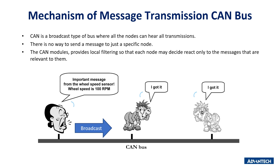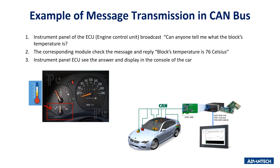CAN is a broadcast-type bus where all nodes can hear all transmissions — there is no way to send a message to just one specific node. However, the CAN hardware provides local filtering so each node can react only to relevant messages. For example, inside a car the ECU sends a message requesting the engine block temperature. All modules receive the message; those with relevant filters respond. The ECU takes the temperature information and displays it on the console. This same information can be displayed on an external panel using a CAN bus PCI card as the interface between the ECU and exterior.